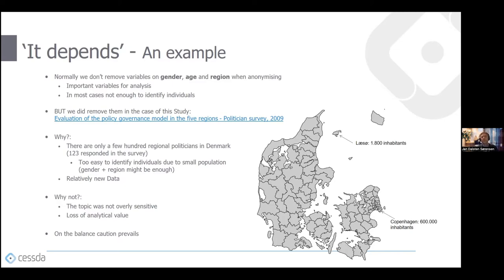I also added a map of Denmark to show the municipalities. The largest in terms of inhabitants is Copenhagen with about 600,000 inhabitants, and the smallest is an island called Ærø with 1,800 inhabitants. It's very different in terms of what types of identifiers could identify you as an individual — being one among 600,000 in Copenhagen versus one among 1,800 in a small island are very different situations.